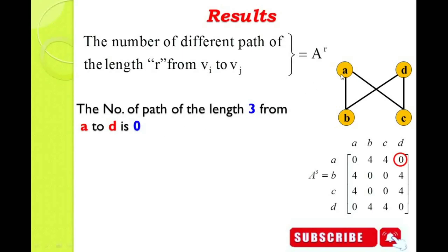We have to travel from vertex A to D using 3 edges. Going A to B is length 1, B to D is length 2 — but we reached D with only 2 edges. Going A to C is length 1, C to D is length 2 — again only 2 edges. Using 3 edges to reach from A to D is not possible. Therefore, the number of paths of length 3 from vertex A to D is 0.